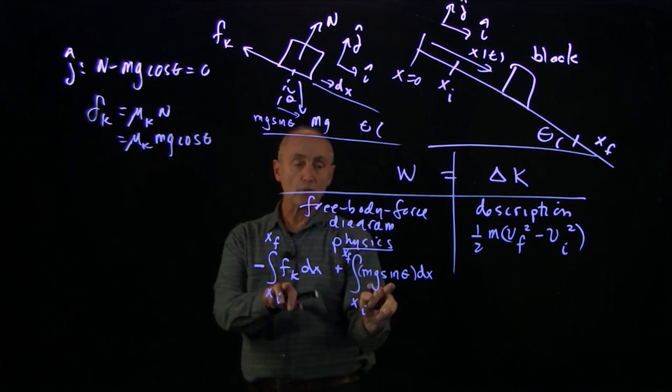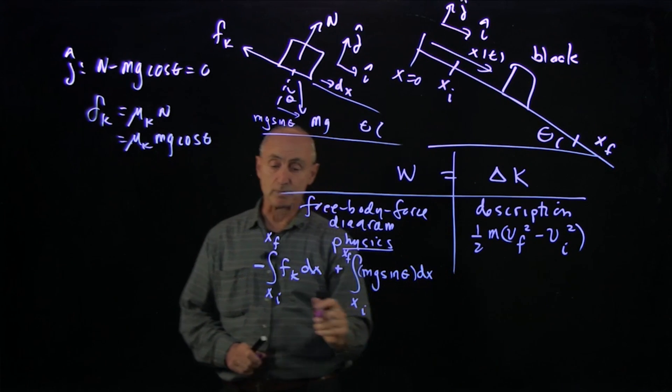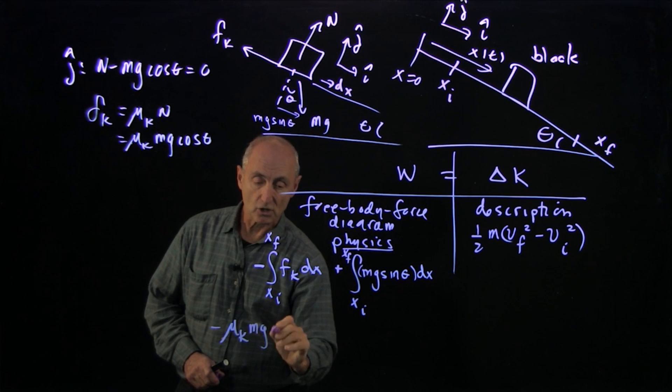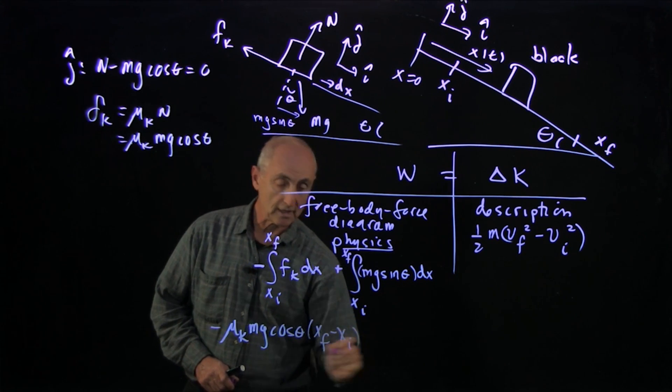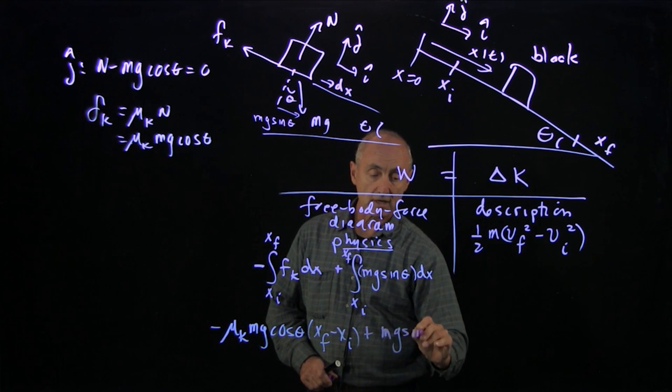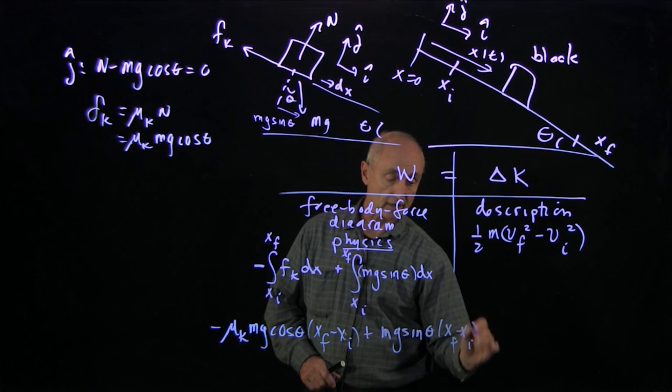Then what we have is, in both instances, we have a constant force. So it's just force times displacement. So we have minus mu k mg cosine theta times the displacement, which is x final minus x initial. So over here, we have mg sine theta times x final minus x initial.